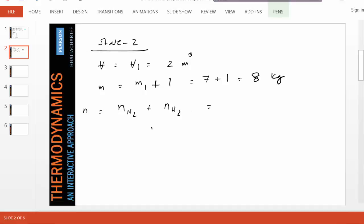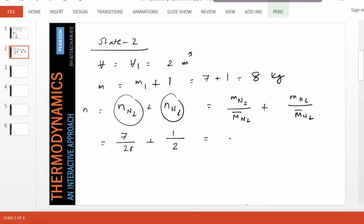So therefore, from the formula that relates mole and mass, mass of nitrogen by the molar mass of nitrogen is the mole of nitrogen. Similarly, mass of hydrogen divided by molar mass of hydrogen will give us the mole of hydrogen. Substituting the numbers that we got, 7 kg of nitrogen and 1 kg of hydrogen, and the molar mass of hydrogen is 2, this gives us 0.75 kilomole.